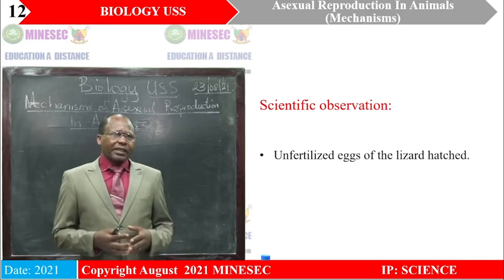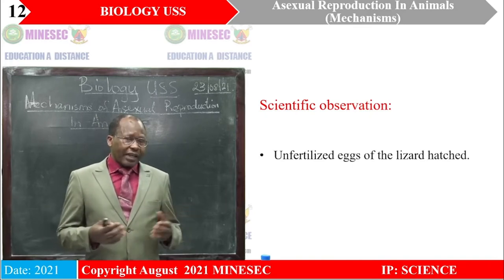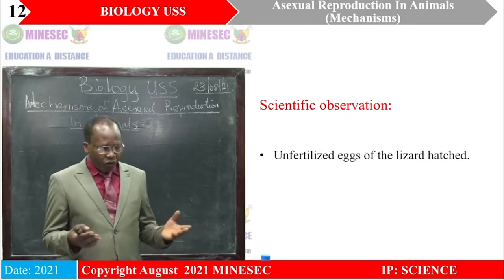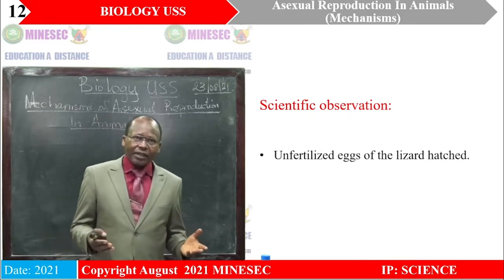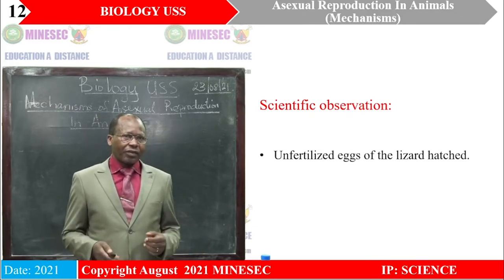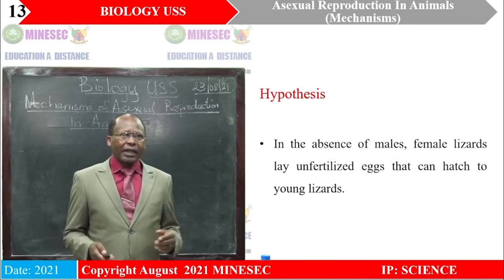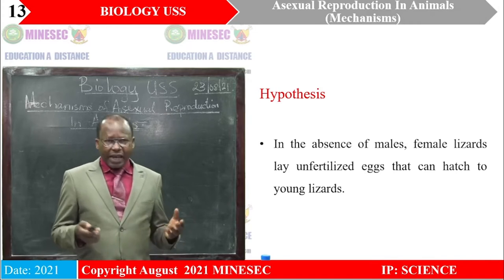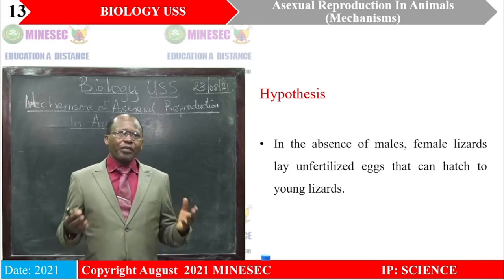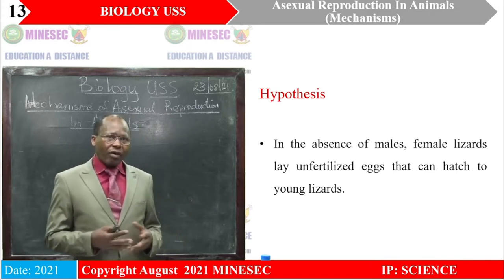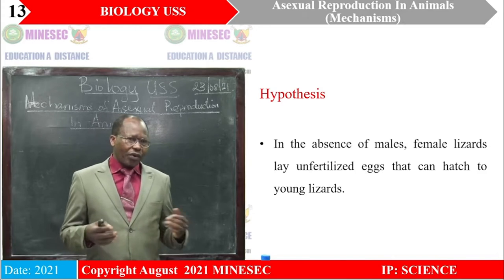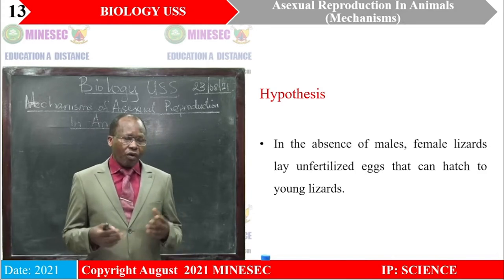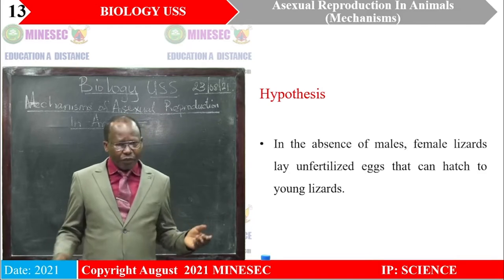From this example, what could be a scientific observation? It has been realized that unfertilized eggs of the lizard hatched, which is seemingly abnormal. Then, what hypothesis could be drawn? In the absence of males, female lizards lay unfertilized eggs that can hatch to young lizards. That is a hypothesis. Let's see how true or false this hypothesis will be.